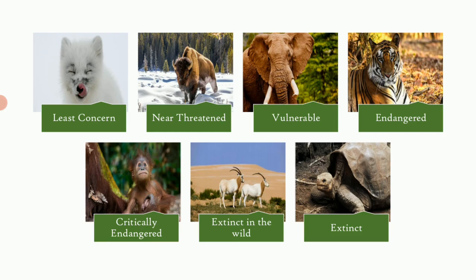The second criterion is the geographic range in which the species is present. The third criterion is the population number — that is, the number of mature individuals in a population. Finally, the fourth criterion is a quantitative analysis for probability of extinction: how soon a species may go extinct. Based on these criteria, species are divided into the nine categories.